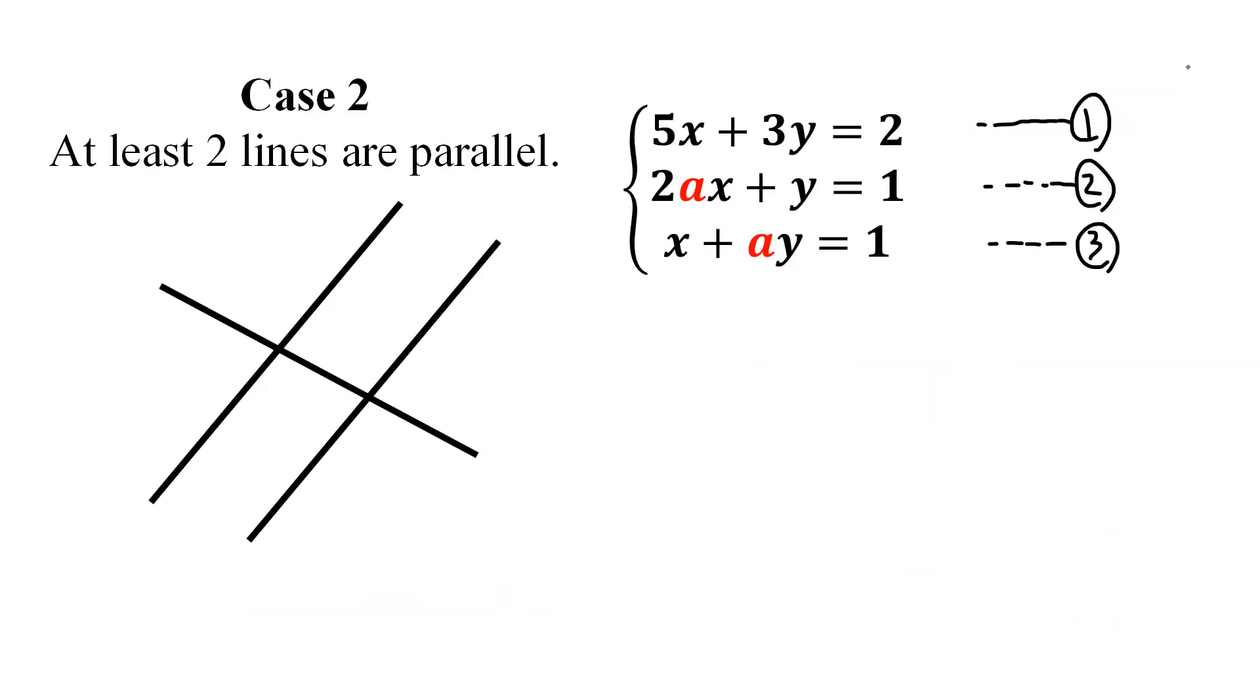Okay, now let's take a look at the second case where at least two lines must be parallel. In order to determine whether two lines are parallel or not, we have to take a look at their slopes. So let us write the slopes of these lines. The slopes are minus 5 over 3, minus 2A, and minus 1 over A.